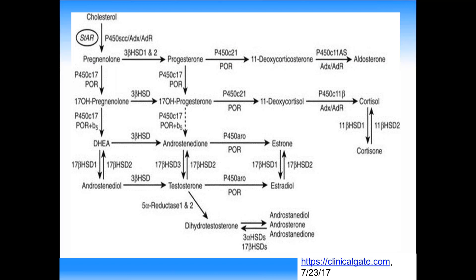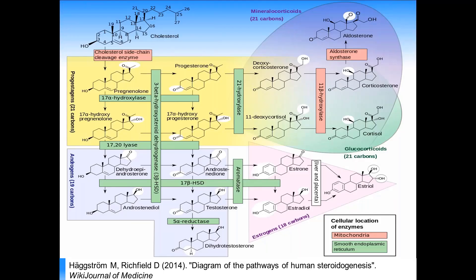This slide highlights the classic chicken wire steroidogenesis pathway — fortunately without the ring structures — giving an overview of the transition from cholesterol to the end products of mineralocorticoids, glucocorticoids, and the sex steroids including estrogens, androgens, and progesterone. This next slide has been described as the most popular presentation of the steroidogenic pathway on the Internet, and I think it's very intuitive and informative.